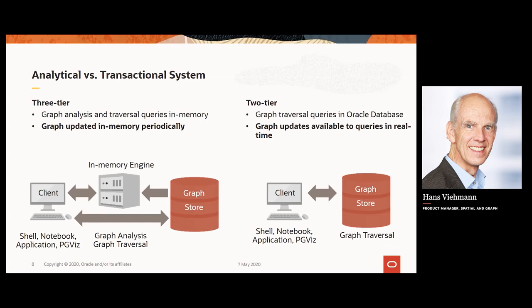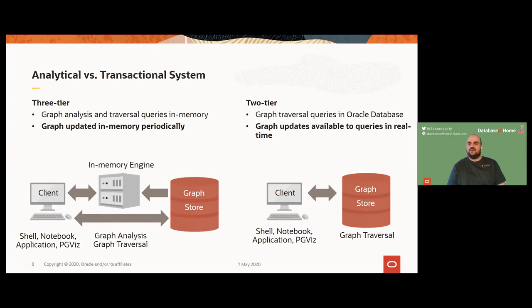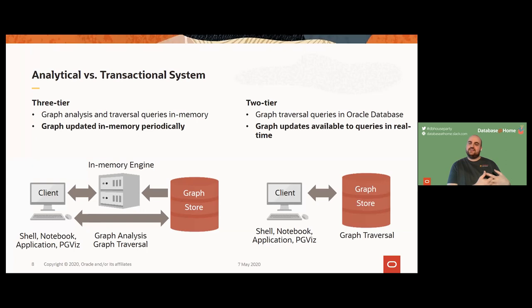This brings us to computational graph analysis. If you have mutating graphs and run a compute-intensive algorithm like betweenness centrality, you don't want the graph changing underneath — it would invalidate all calculations. Having a graph is nice, but just having one isn't really useful. The real power is in algorithms. You may remember graph theory from mathematics class — graphs are based on mathematical theories, and you can leverage these theories to get extremely powerful algorithms out of the box.